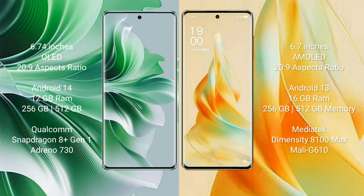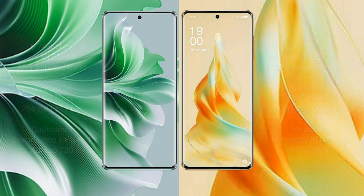The OPPO Reno 11 Pro comes with 12GB RAM and 256GB or 512GB internal storage, Qualcomm Snapdragon 8 Gen 1 processor, with Adreno 730 GPU. The OPPO Reno 9 Pro comes with 16GB RAM and 256GB or 512GB internal storage, MediaTek Dimensity 8100 Max processor, with Mali-G610 GPU.